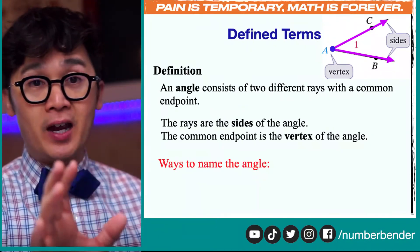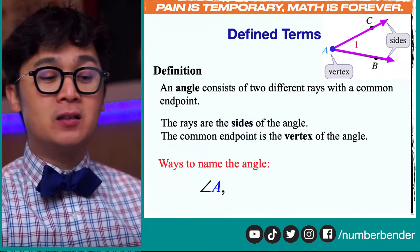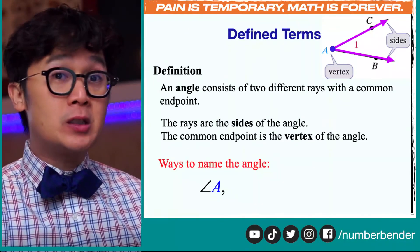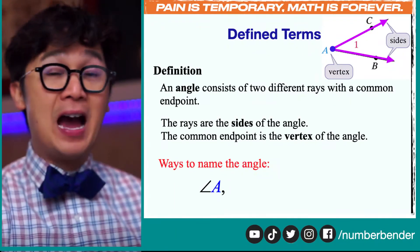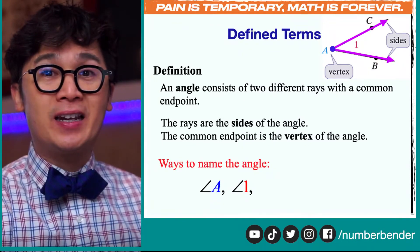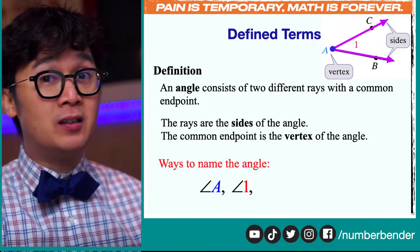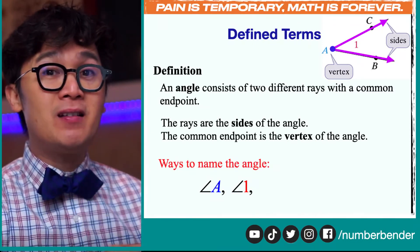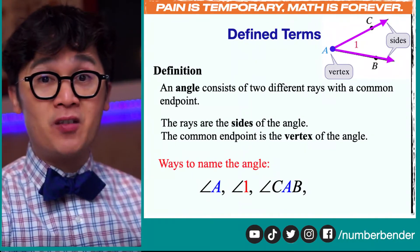Just like points, planes, and lines, we have ways to name an angle properly. One of them would be angle A, using the vertex to represent an angle. But sometimes we have multiple angles with the same vertex, so we can use angle 1, which is what you see inside the opening of our angle. Another way of naming an angle is using the points — we have points C, A, and B — and we can name it as angle CAB.